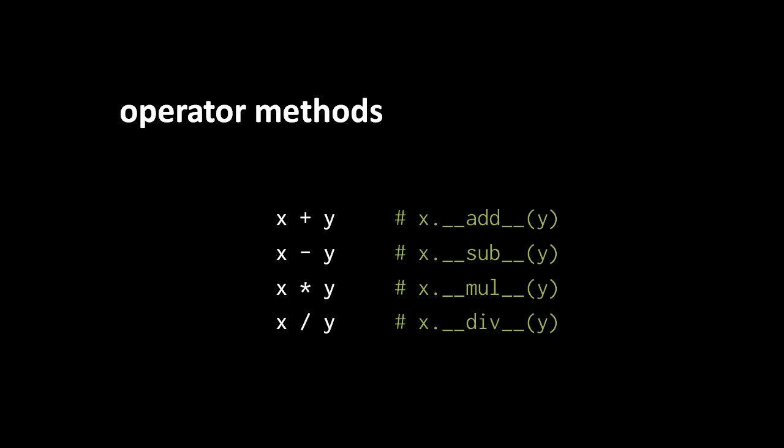Now usually when you use arithmetic operators, you use them on numbers. So imagine here that x is a number, it's an integer, and so the method __add__ here is being invoked on an instance of the integer type int. If you look in the int class...